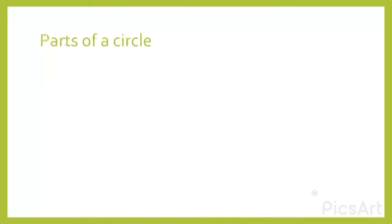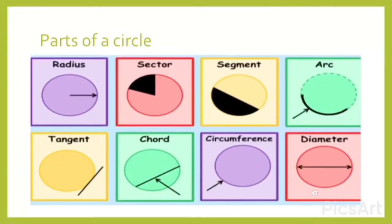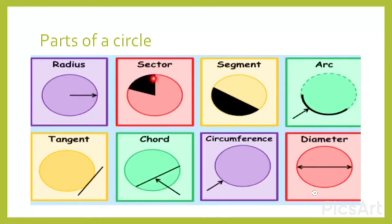Now let's have a look at the parts of a circle. First, circumference — the outer part of the circle, which means the boundary of the circle. Then comes radius: a line drawn from the middle point of the circle to the circumference. A sector is formed when two radii are joined together.